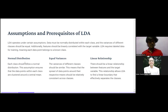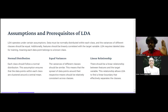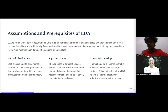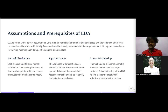Let's look at the assumptions in detail. First, normal distribution: each class should follow a normal distribution, like a mountain curve. This ensures that the data points within a class cluster around a central mean. Second, equal variance: the variance of different classes should be similar — the spread of data points around their respective means should be consistent across classes. The curve should not have an extreme stretch, which would indicate outliers.